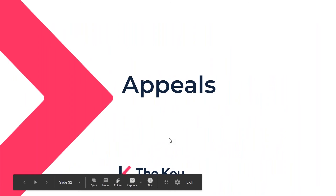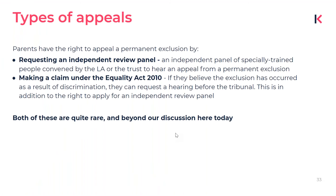It is possible for parents to appeal an exclusion, and there are two routes they can take. The first is by requesting an independent review panel — a panel of three or five people convened either by the local authority for maintained schools or the trust for academies, trained to hear appeals from permanent exclusions. Parents can also make a claim under the Equality Act 2010 if they believe the exclusion was a result of discrimination, which would be a hearing in front of a tribunal. Both routes are rare, and if you find yourself in this circumstance, it's probably best to seek legal advice.